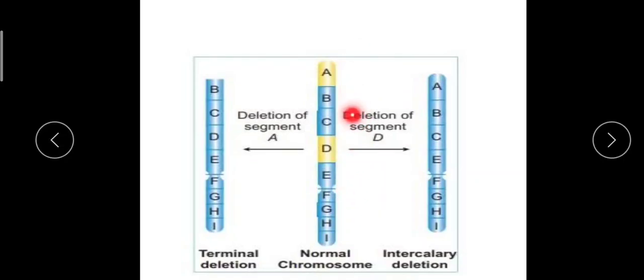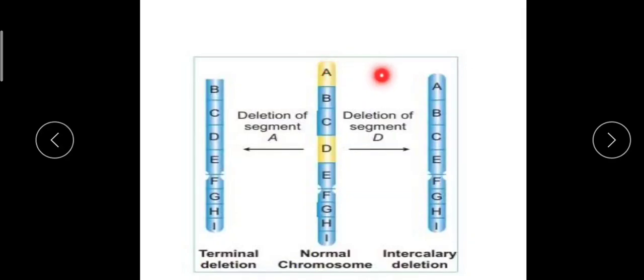In homozygous deletion, both homologous chromosomes undergo deletion of the same segment — for example, if both homologous partners lose the 'a' segment, then both will be missing that segment. This type is called homozygous deletion.